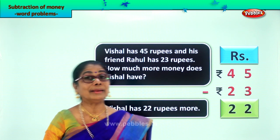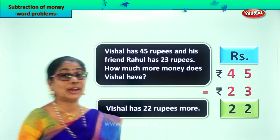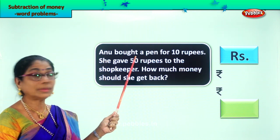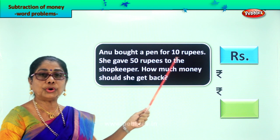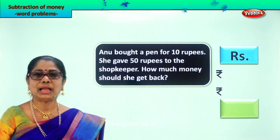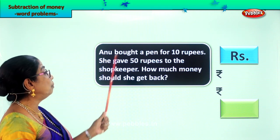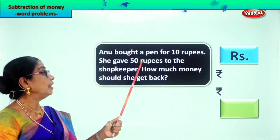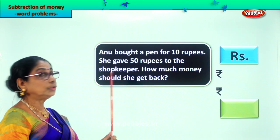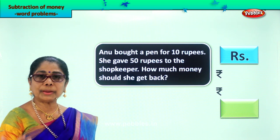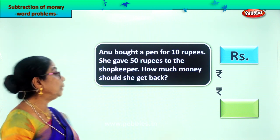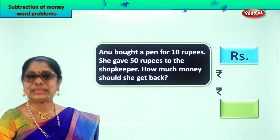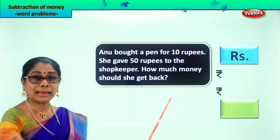Let's take another sum. Read together and work it out together. Anu bought a pen for 10 rupees. She gave 50 rupees to the shopkeeper. She bought a pen for 10 rupees and gives the shopkeeper a 50 rupee note. The question is, how much money should she get back?